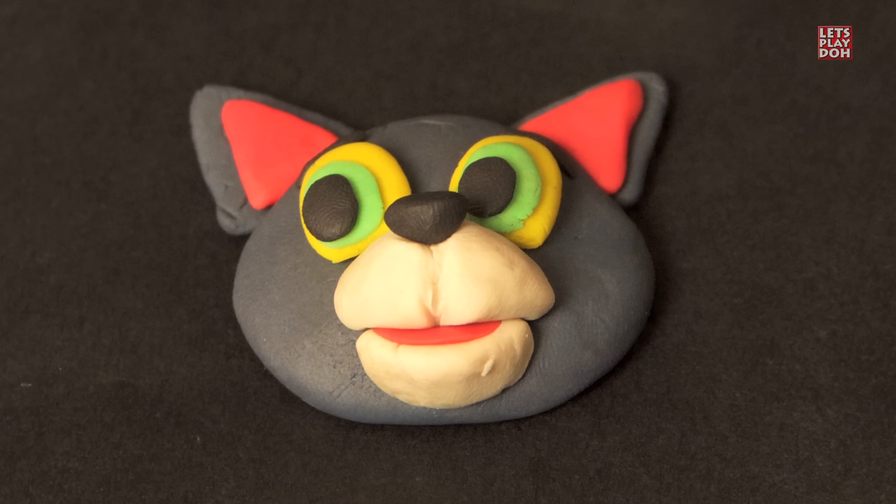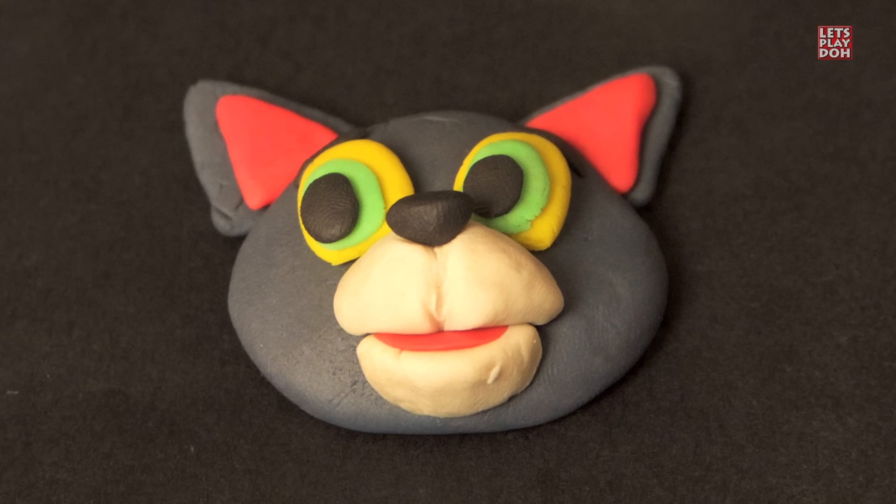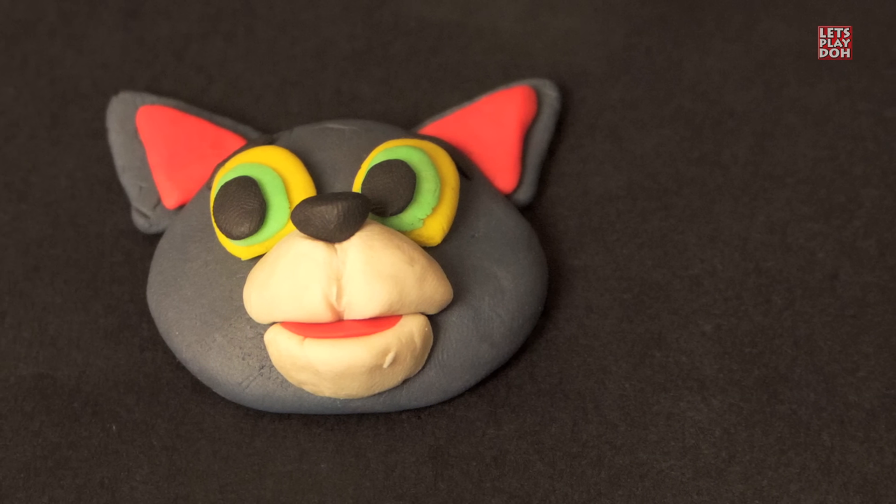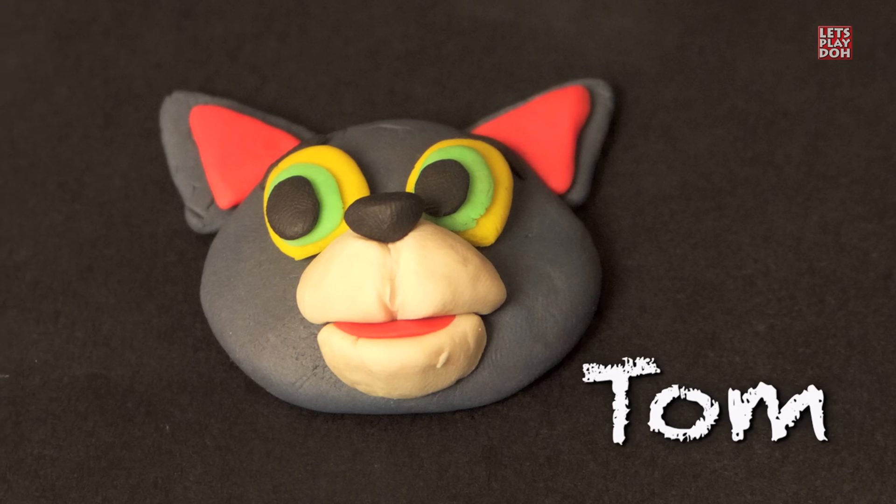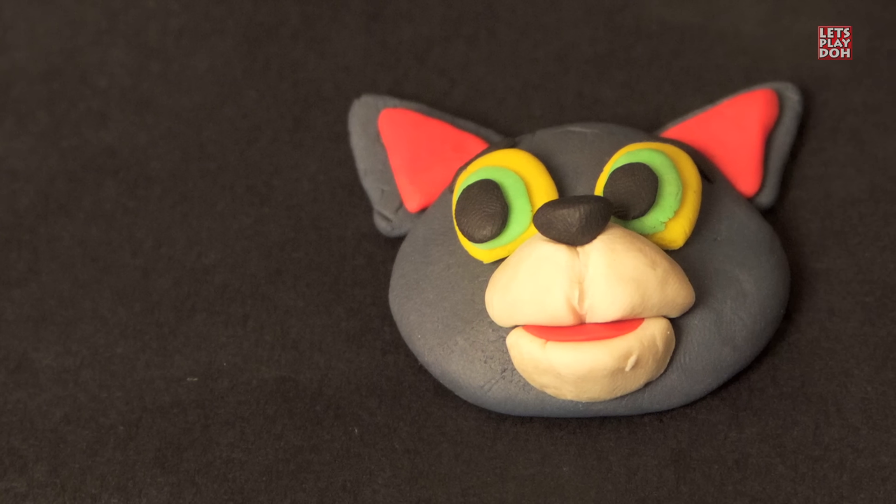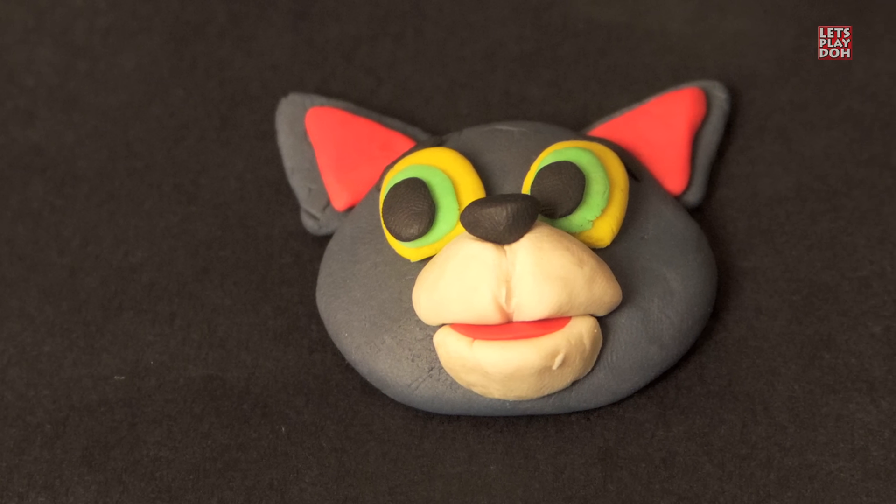Hello everyone and welcome back to Play-Doh Videos. Today we're gonna make one part of the famous Tom and Jerry combination. You know, Tom and Jerry, the cat and the mouse in the cartoons? Well today we're gonna put together Tom the cat. It's gonna be really simple and a lot of fun. Let's get started. Are you ready?